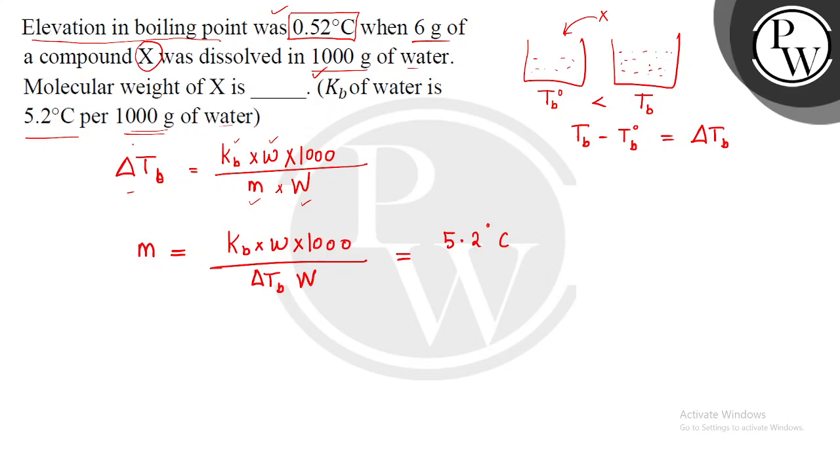Per thousand gram of water, or thousand gram ka matlab one kilogram bhi hota hai. So yaha se 5.2 into W, that is solute ka weight, that is 6 gram, into 1000 upon delta Tb, elevation in boiling point, that is 0.52 degree Celsius, into capital W, that is solvent ka mass, that is 1000 gram.